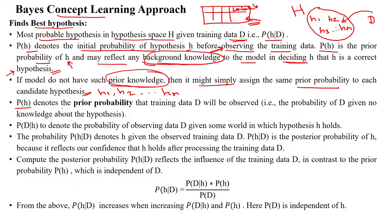P(D) denotes the prior probability that the training data will be observed — that means the probability of data D given no knowledge about the hypothesis, i.e., the dataset which is not providing prior knowledge. P(D|H) is the probability of observing data D given some knowledge in which the hypothesis H holds.